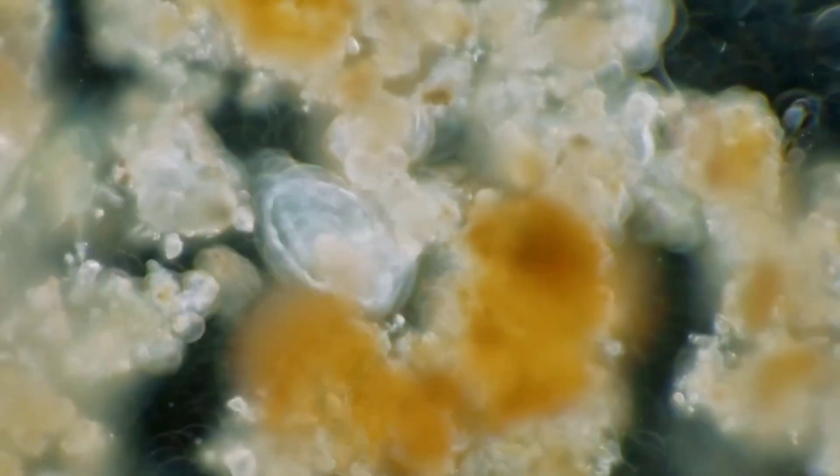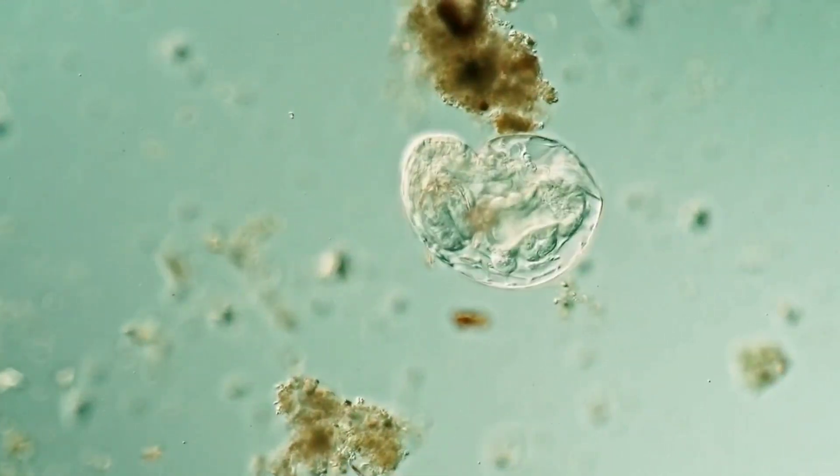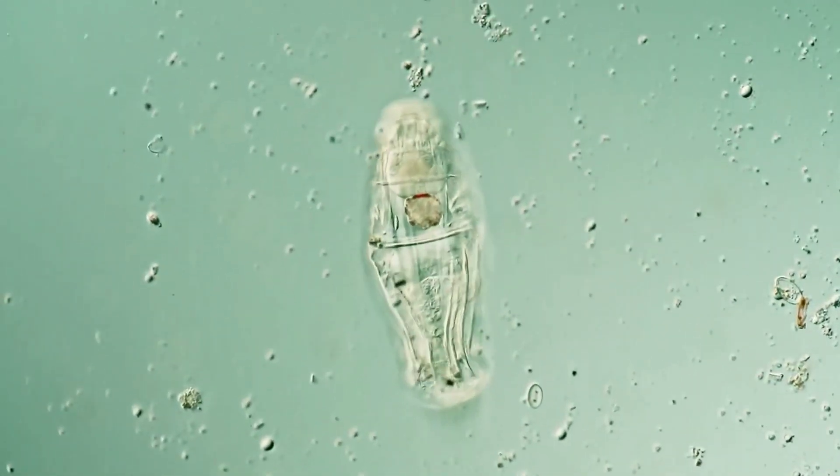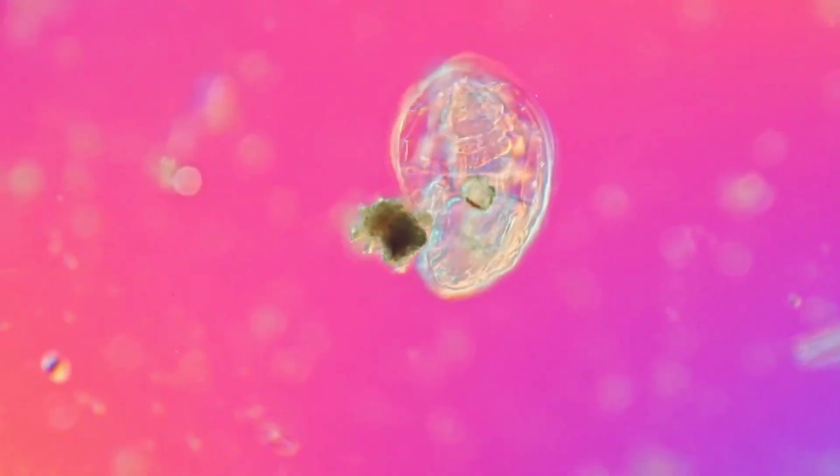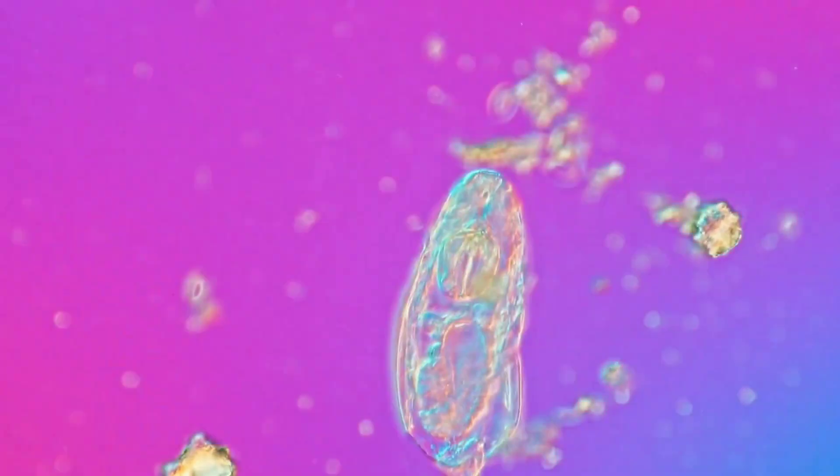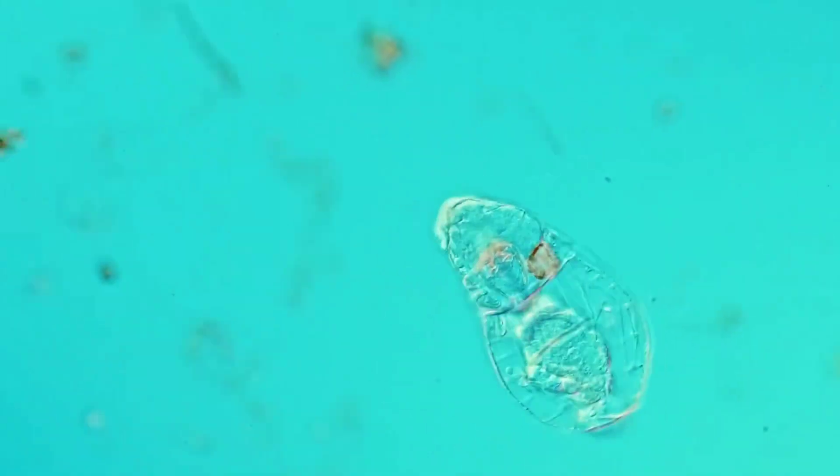There are three types of condenser such as Abbe condenser, Cardioid condenser, and Paraboloid condenser for dark field microscope. We need to ensure that the numerical aperture of condenser is greater than that of the highest power objective we will employ.